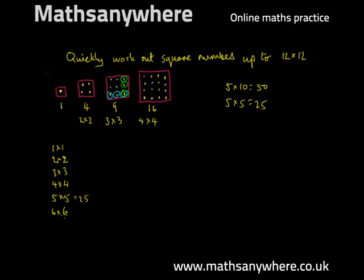Six times six, if you want to work that out, you might say six times ten equals 60. Six times five is 30. That's half of six times ten. Six times six is six times five plus six, which is 36. So that's our sixth square number.